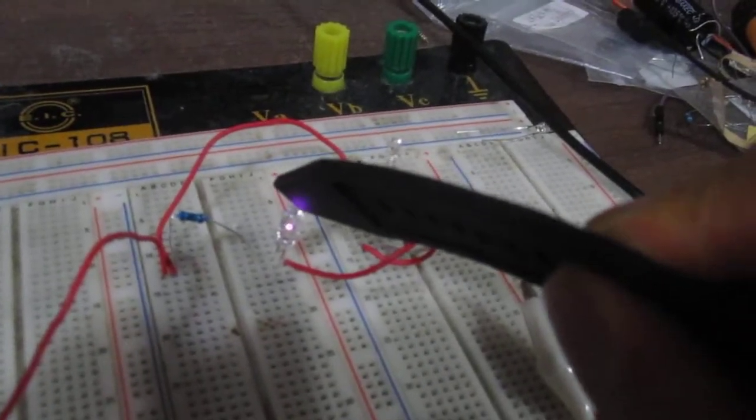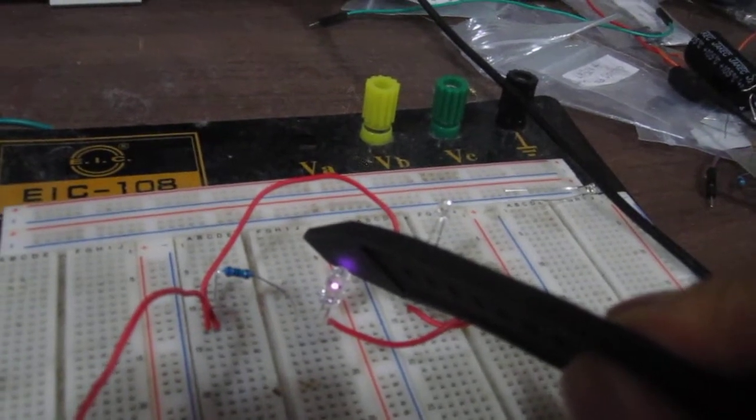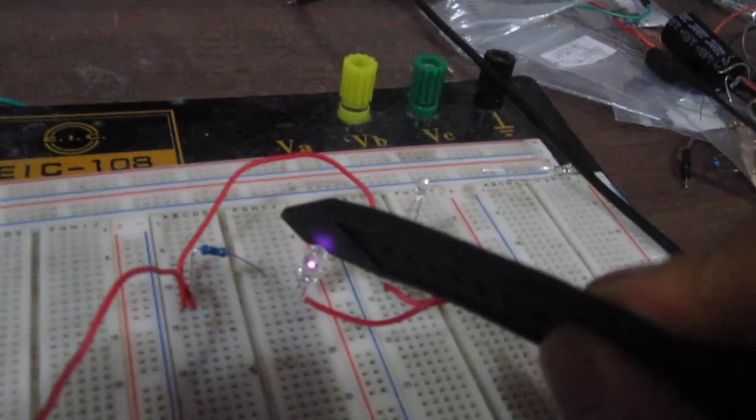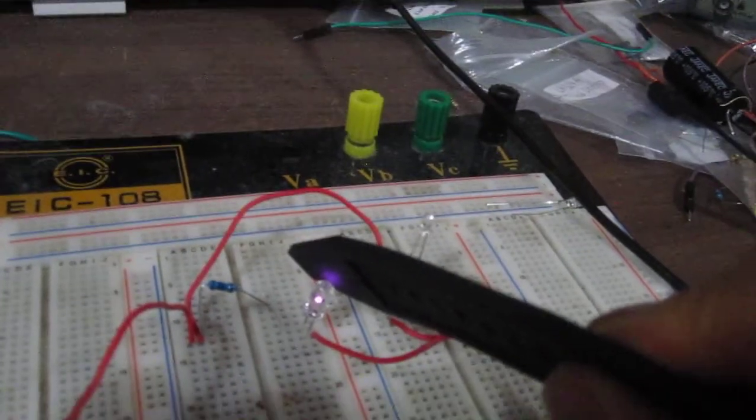But if I block in between so that the photo transistor no longer gets the infrared light, you can see the blinking has stopped. The transistor is in an off state.